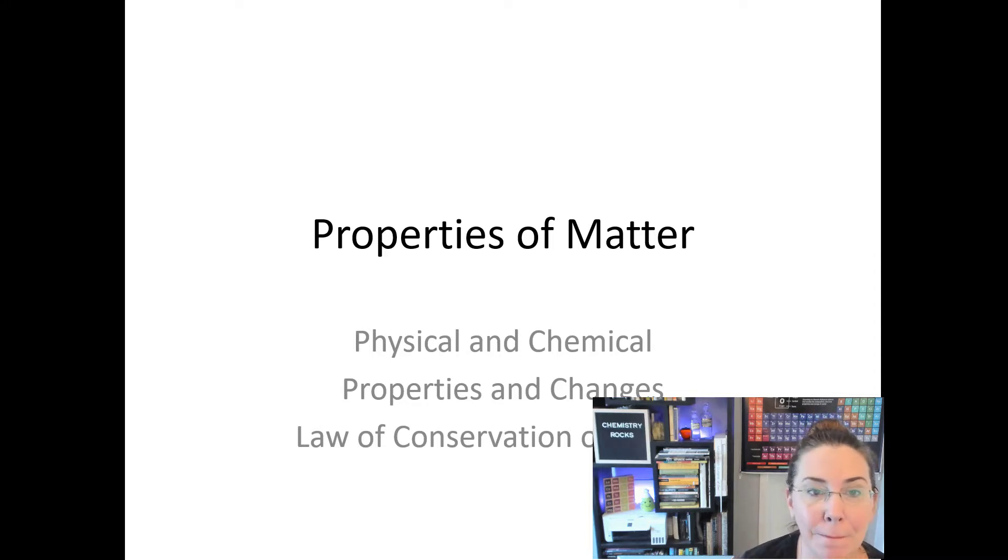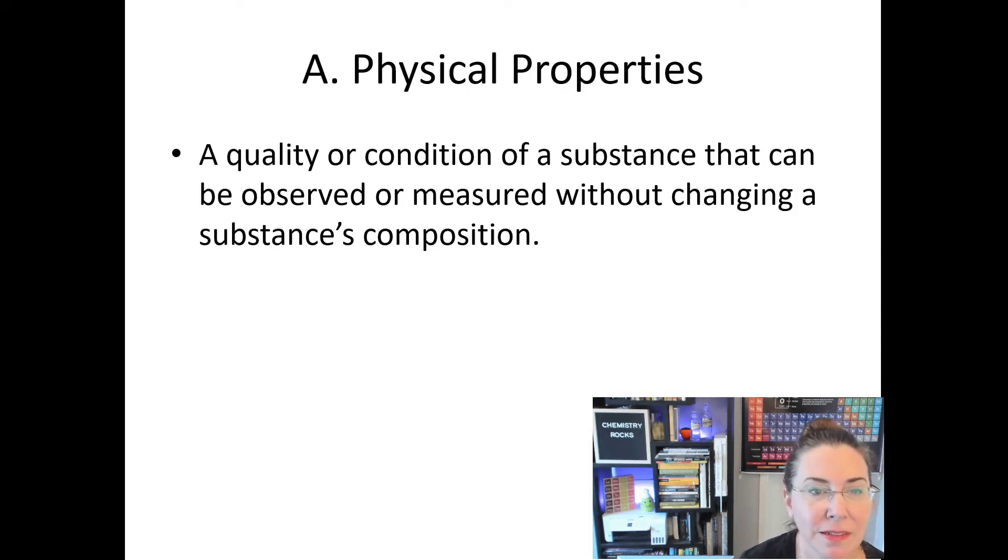When we're talking about matter, first let's talk about physical properties. Oftentimes these are the ones that are easiest for us to conceptualize and understand. A physical property is a quality or a condition of a substance that can be observed or measured without changing a substance's composition. This means you don't have to do anything to the substance, generally, to be able to observe that property.